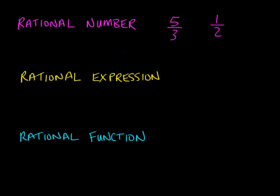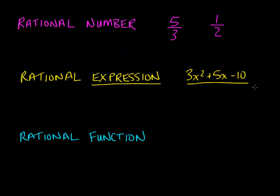A rational expression is the same idea — it's a ratio, but this time it's a ratio of polynomial expressions in the numerator and denominator. Something like 3x squared plus 5x minus 10 over 2x minus 3. We've got a quadratic expression in the numerator and a linear expression in the denominator, but together it forms a rational expression.